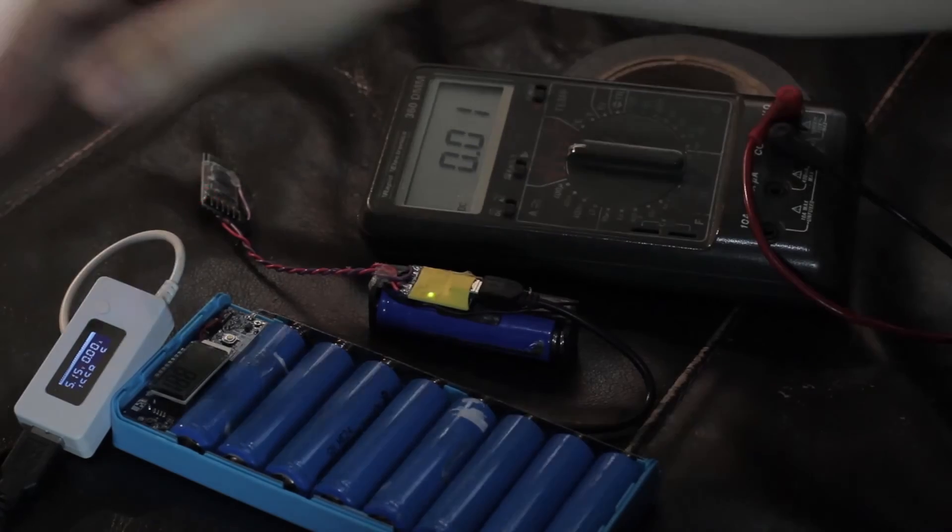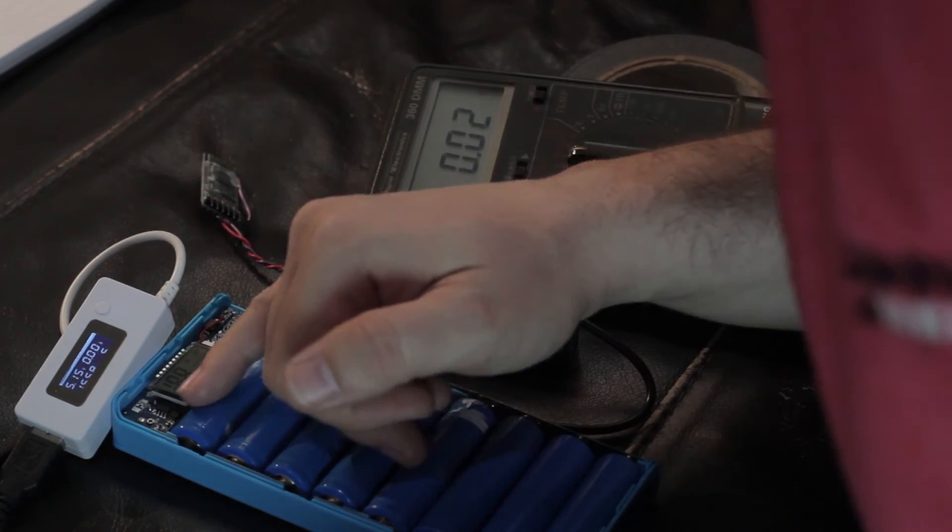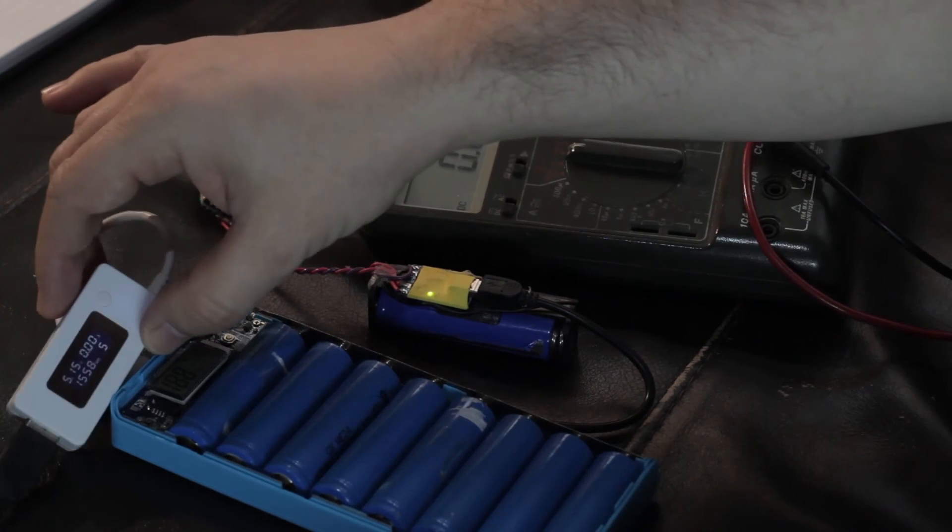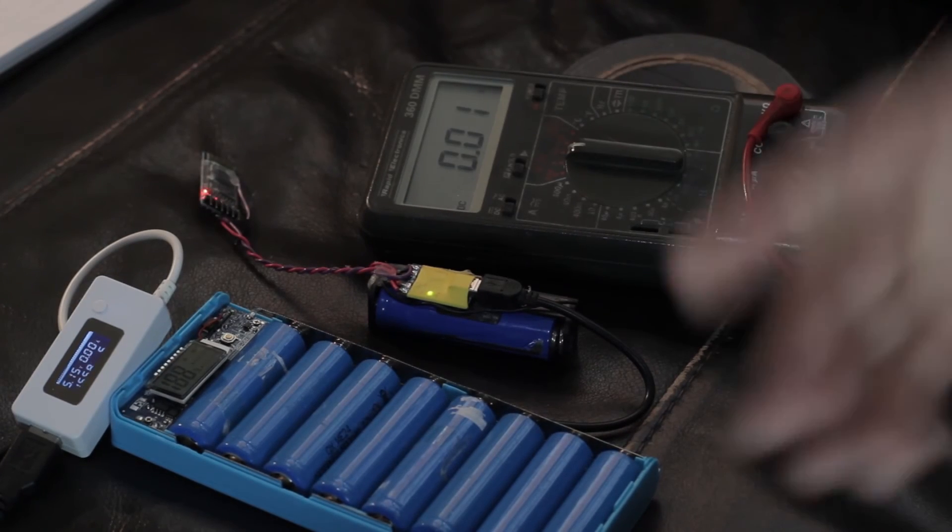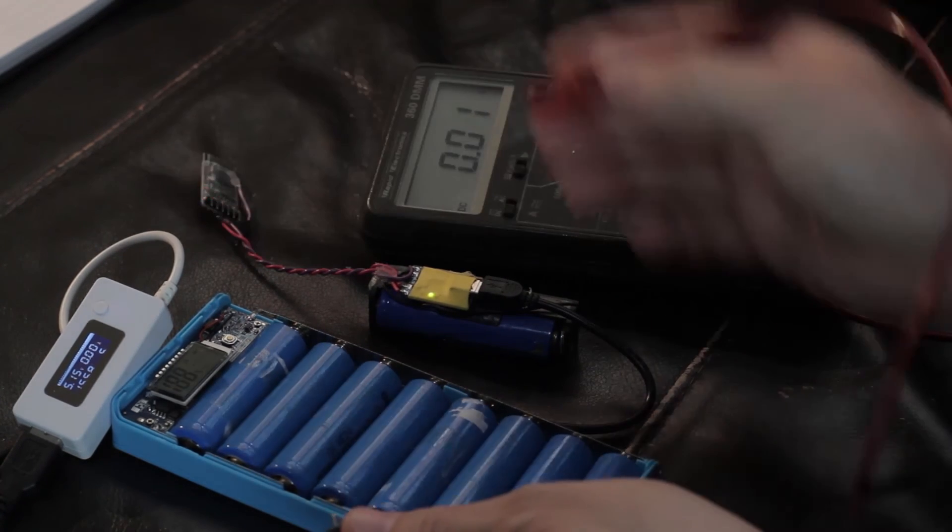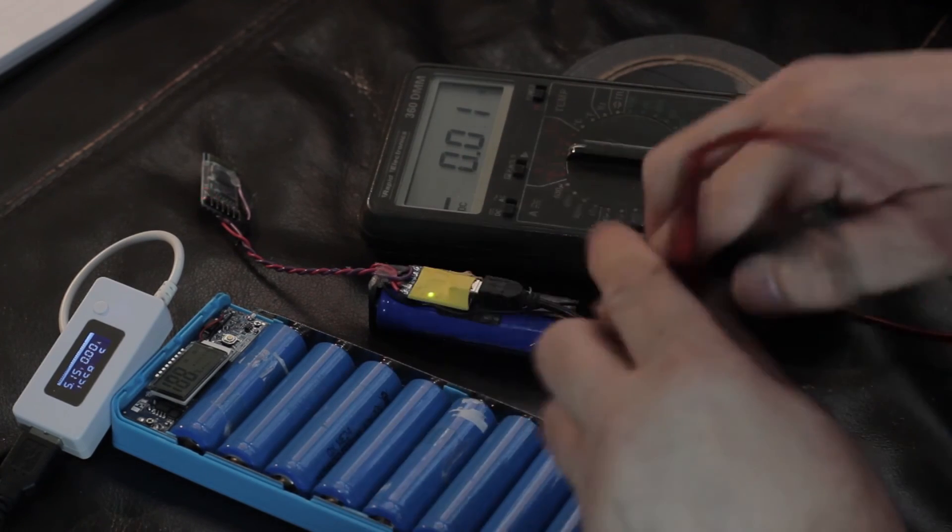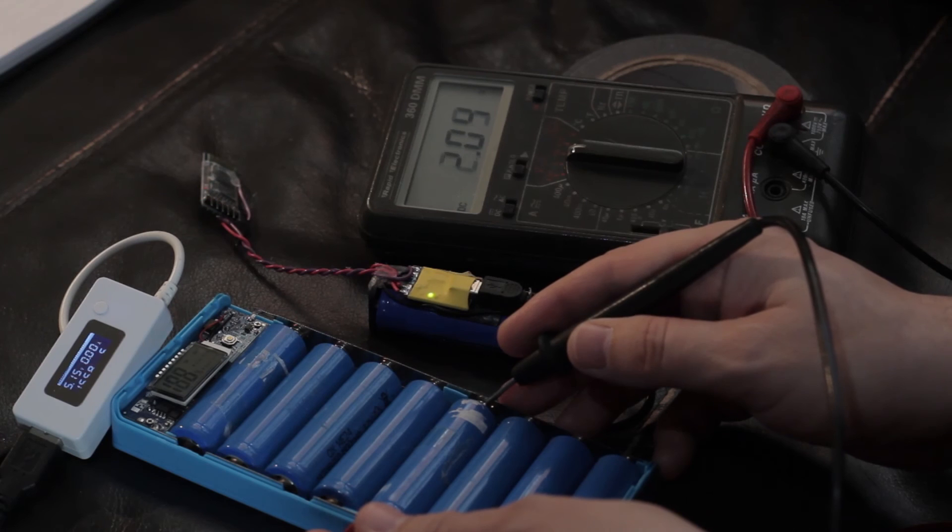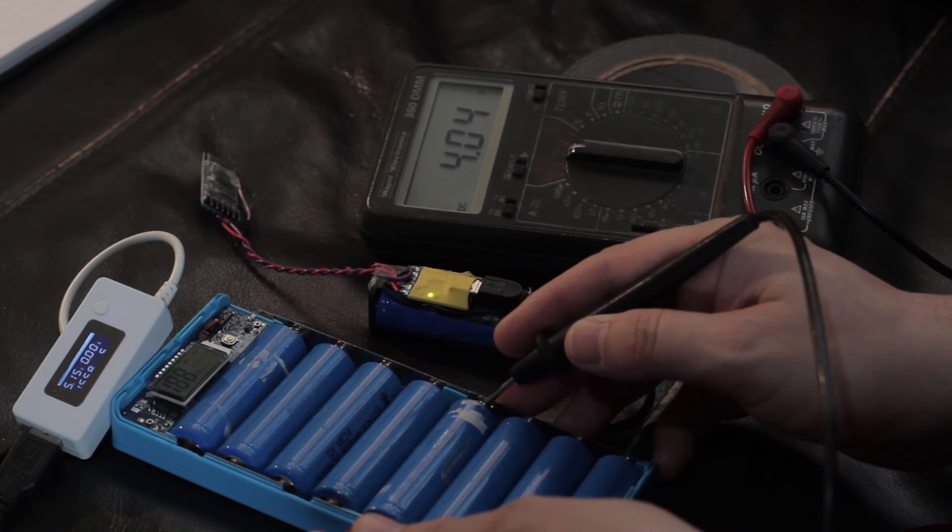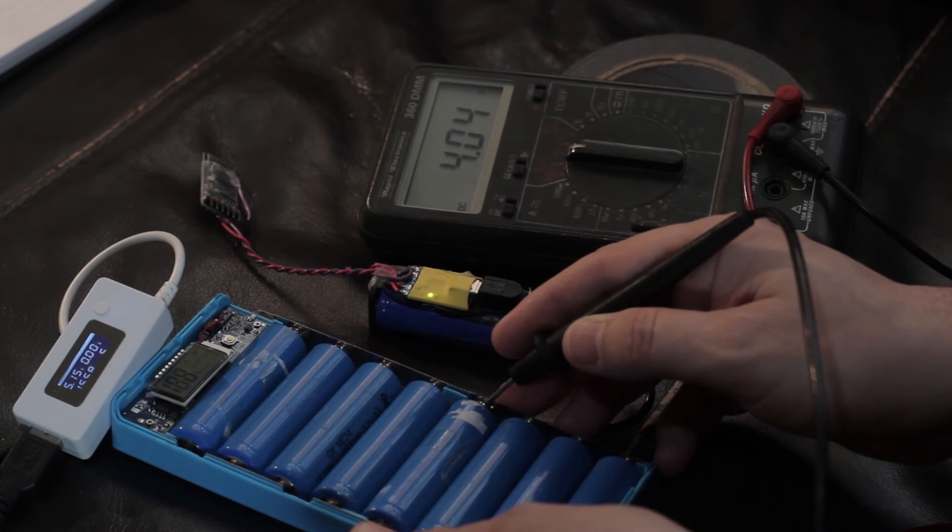So, it's dropped back down to 4.16 volts after it came off the load at 4.2 volts. The power bank is pretty much gone to sleep. The display has gone off. It's still generating 5.15 volts. So, the voltage is still present. It's still doing some step up there, but there's no output current.